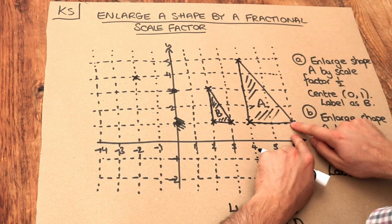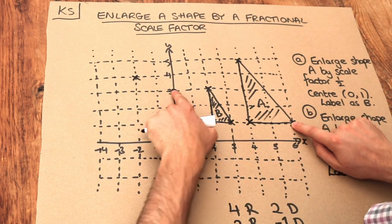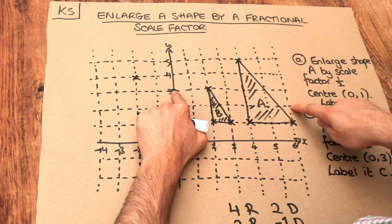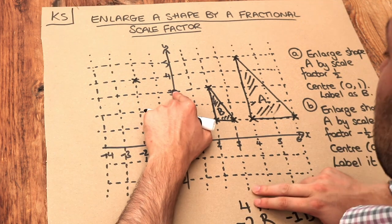Let's do another point, this one here. Starting from the centre of enlargement, we have 1, 2, 3, 4, 5, 6 right and 1, 2 down. The 6 right, if we multiply it by negative half,